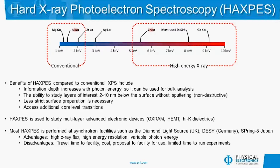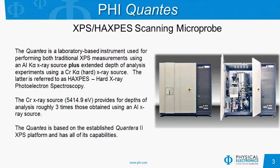Most HAXPES is performed at synchrotron facilities. These have the advantage of high X-ray flux, which compensates for the reduction of photoelectron cross-section with higher photon energies. They have high energy resolution, and you can also vary the photon energy. Some disadvantages are that you have to travel to the facility, not everyone has a synchrotron nearby, there are costs to using it, you must submit requests for beam line time, and you're given limited time to run experiments.